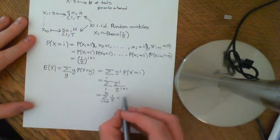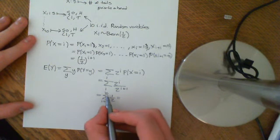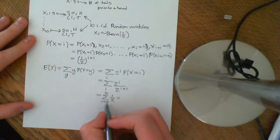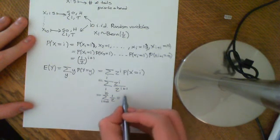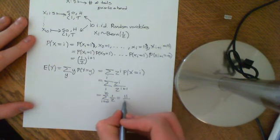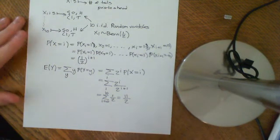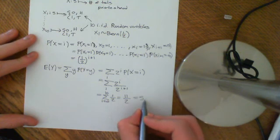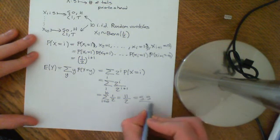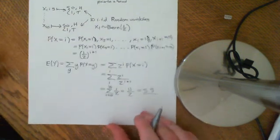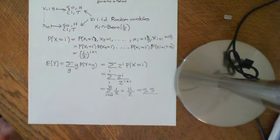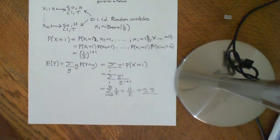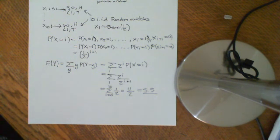We're summing up a half 11 times, because we're summing over i = 0 to 10, so we get 11/2. So that is a more reasonable expected value — you expect to earn £5.50 on this game. If you make a finite game like that, then you can expect to win a finite amount of money, which seems much more reasonable than expecting to win an infinite amount of money.